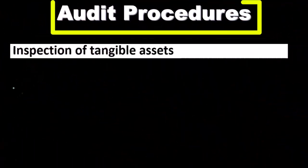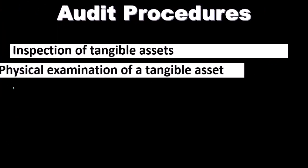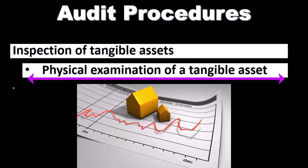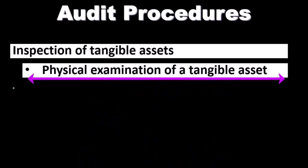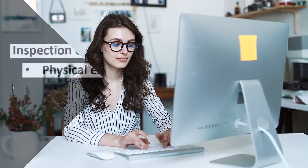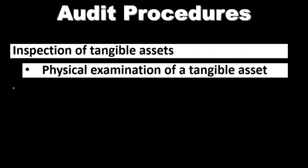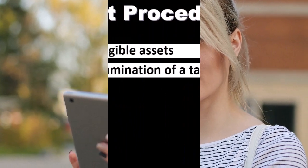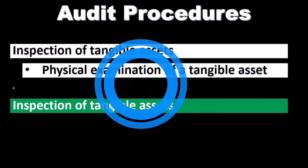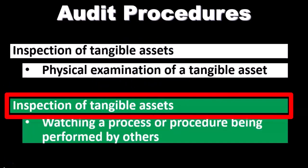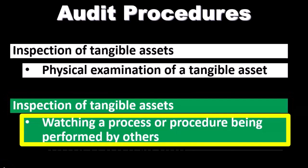Audit procedures also include the inspection of tangible assets. When we think about tangible assets, we're typically thinking about larger items like property, plant, and equipment — things we can physically examine. If the books say the company has a certain number of forklifts, a building, or a piece of equipment, we can actually go out and physically examine whether that equipment exists. We may not be able to value it as an auditor, but we can inspect it and confirm it's there. We can also observe a process or procedure being performed in relation to those tangible assets.